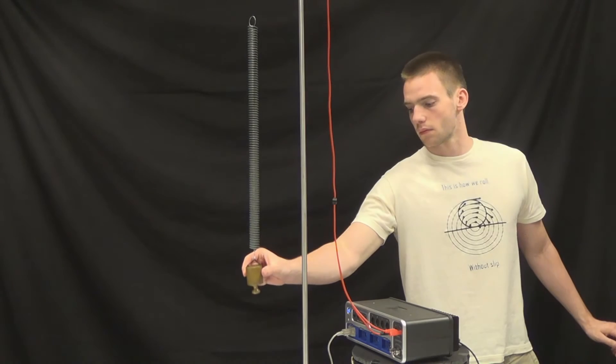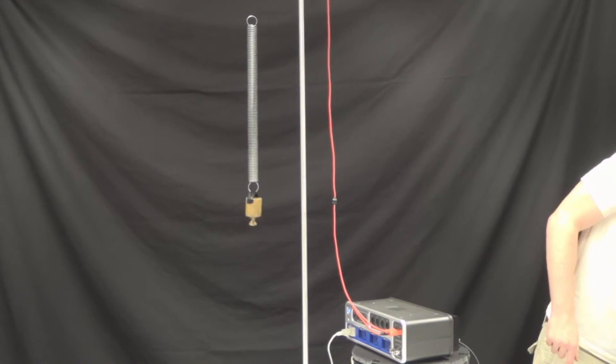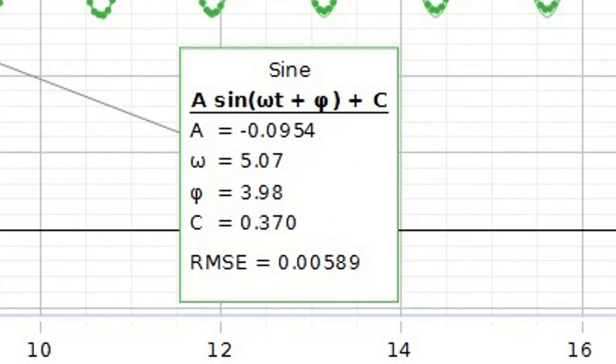First, we will find the natural frequency of the system. To do this, I set the spring into motion and measure its response with the ultrasound sensor below. Then, I do a sinusoidal curve fit on the graph in order to find the natural frequency.